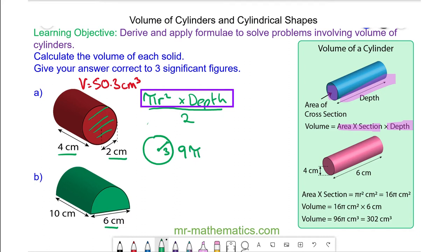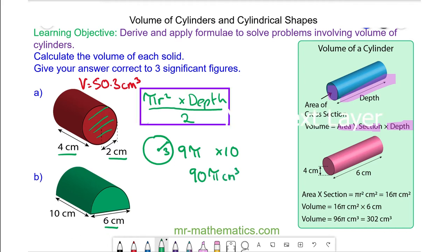The depth is 10 centimeters, so we're multiplying this by 10. The volume of the full cylinder is 90 pi centimeters cubed. But because we want half a cylinder, we divide this by 2 and get 45 pi centimeters cubed. We can approximate this as a decimal as 141 centimeters cubed to 3 significant figures.